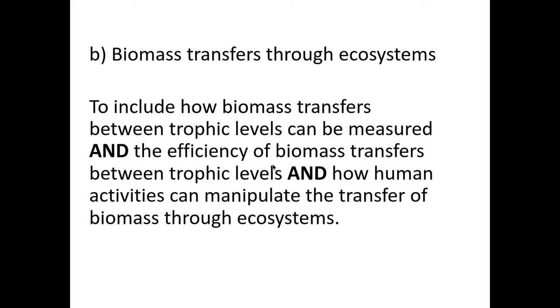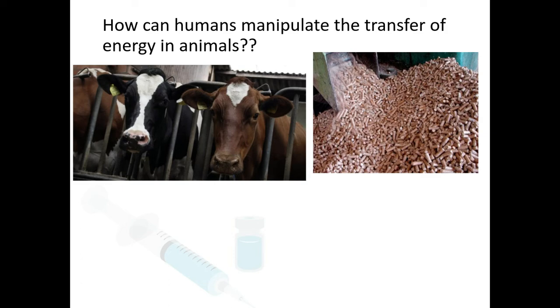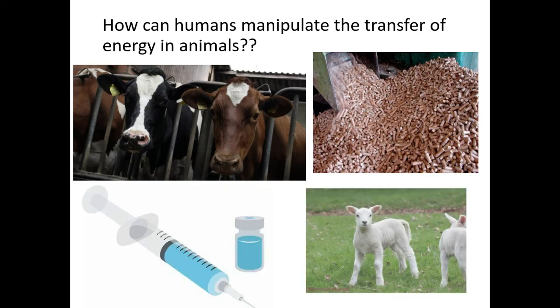We've pretty much done the first two sections; we're now going to look at human activities and how they manipulate the transfer of biomass. This image here shows animals kept indoors, which also provides them with warmth. Two reasons why they won't lose mass: if kept warm, they won't lose energy through respiration to maintain body temperature, and if they're not moving as much, they won't waste energy in respiration.